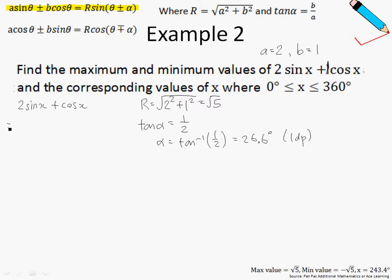Next, let us write the given function out in the form of the R formula. So we have R, which is square root of 5, times sine of x plus alpha. I'm going to leave it as it is for now, because I will move on to solve for the maximum and minimum values as well as the corresponding values of x.